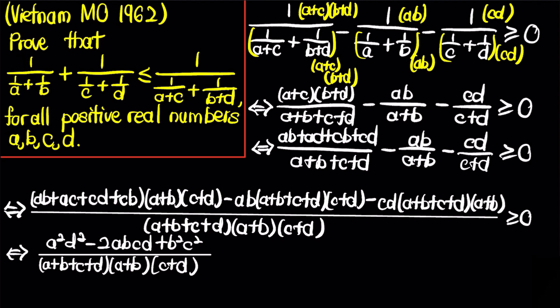After expanding everything, the expression simplifies to (a²d² - 2abcd + b²c²) divided by (a+b+c+d)(a+b)(c+d), which is greater than or equal to 0. The numerator is equal to (ad - bc)², and since a, b, c, d are positive reals, this whole expression indeed holds. Therefore, we are done.